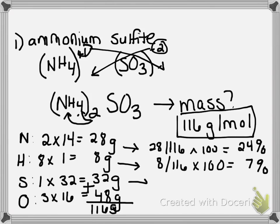For sulfur, we're taking the mass, 32 divided by the total mass, times that by 100%, and our percent composition for sulfur is 28%.